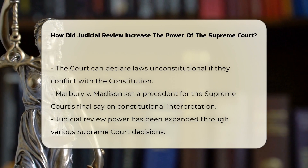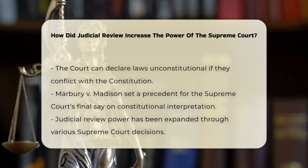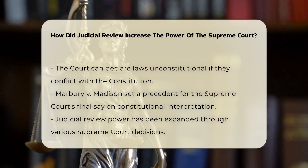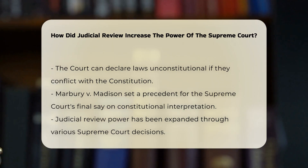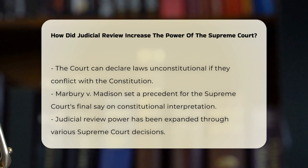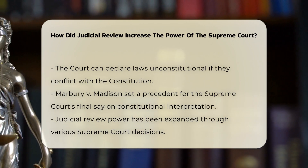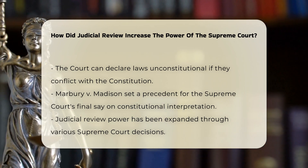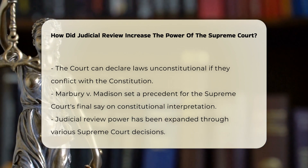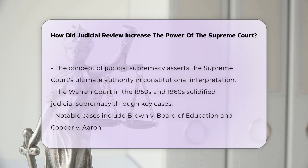Over time, this power has been expanded and reinforced through various decisions. For instance, the court has used its judicial review power to strike down laws that it deemed unconstitutional, even when these laws were passed by Congress and signed by the President. The concept of judicial supremacy, which holds that the Supreme Court has the ultimate authority on constitutional interpretation, has been a central theme in this expansion.